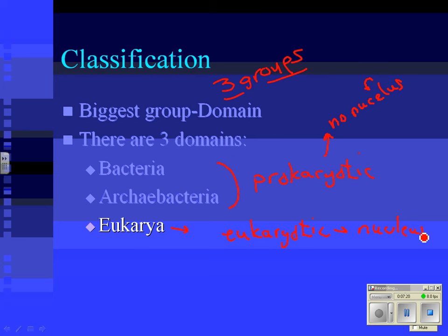In our system of classification, we take every living thing and put them into three basic groups. Two of the groups — bacteria and archaebacteria — have no nucleus in their cells, and if you know anything about bacteria, you know they're really small. Eukarya, on the other hand, includes things like trees, humans, and dogs — anything that has cells with a nucleus.